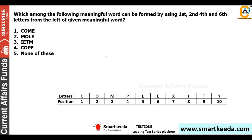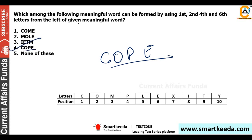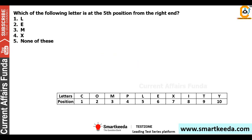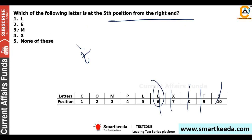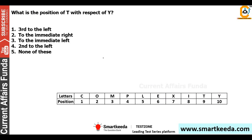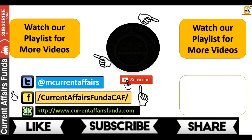The sub-question asks: which meaningful word can be formed using the first, second, fourth and sixth letters from the left of the meaningful word COMPLEXITY? Those letters are C, O, P, E — forming the word COPE. The answer is option number two. You can subscribe to the channel and watch the playlist. Thanks for watching.